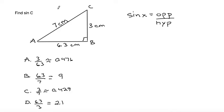Now we need to figure out from the perspective of which angle we're looking. We're looking for sine of C, so we're looking from this angle.